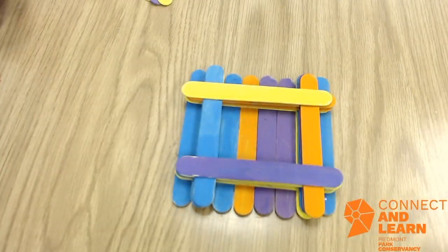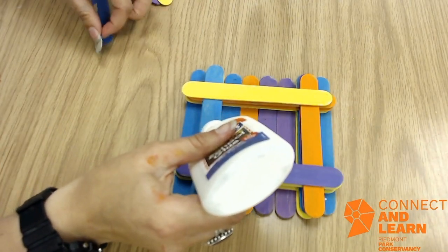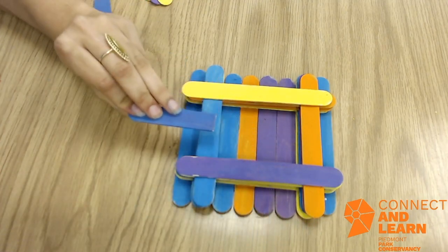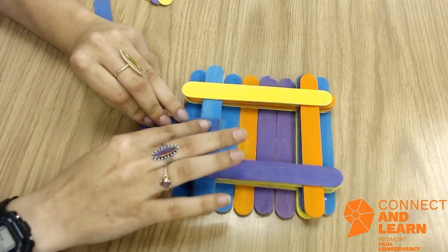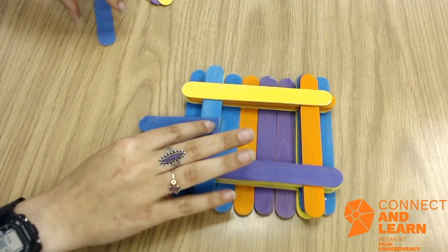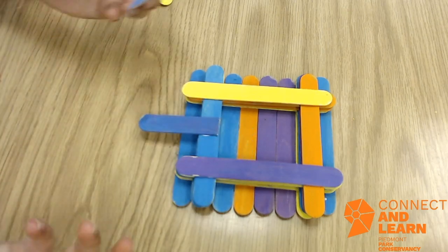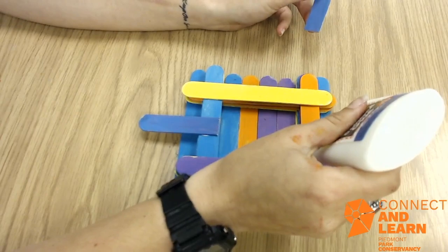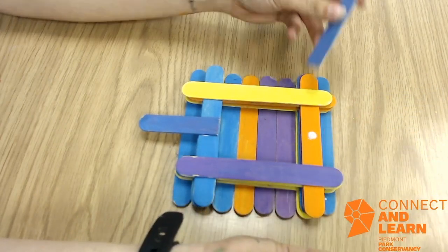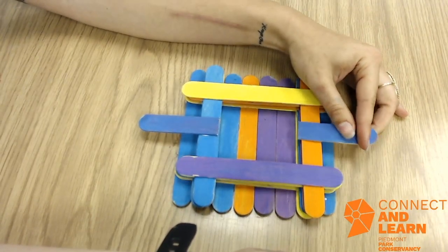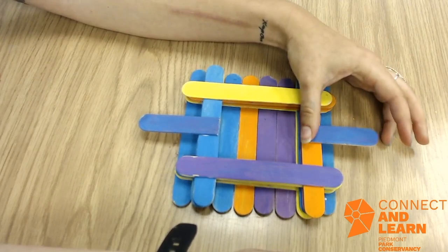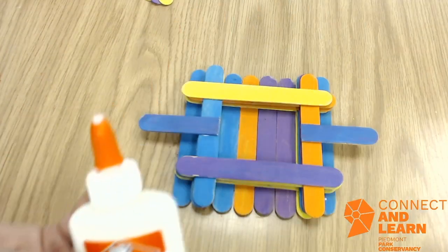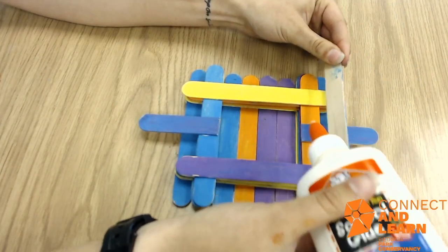Our next step is to glue on these two pieces so birds can perch right here. What I did is I took a popsicle stick and cut it in half. We'll glue those down and then continue to build our base up.